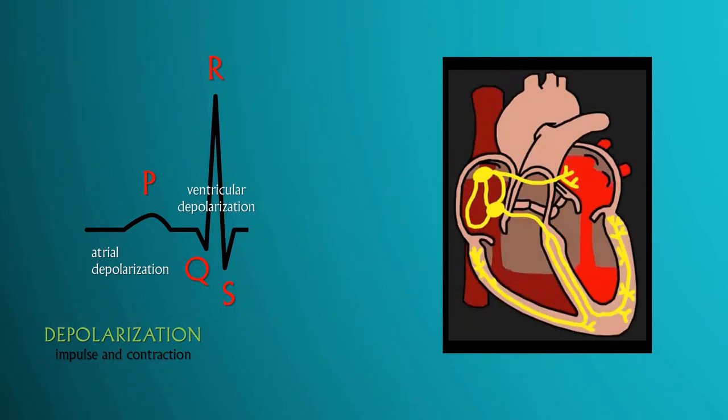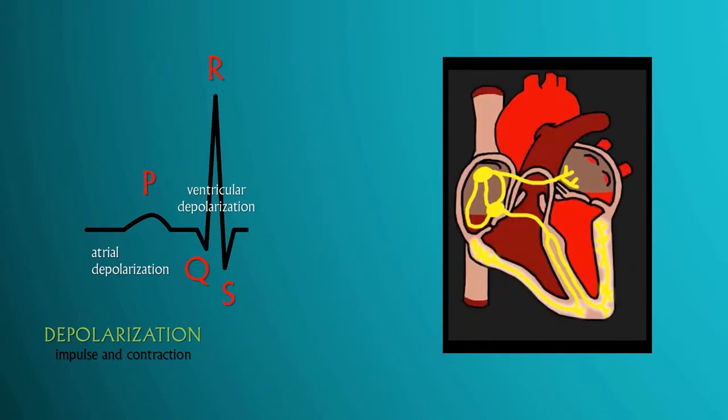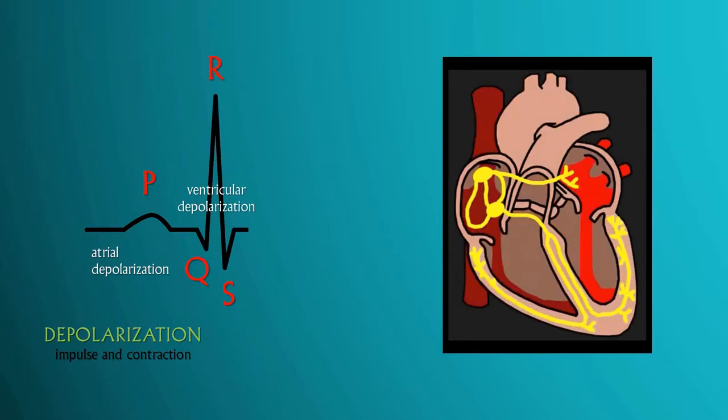As the impulse travels through the heart, cardiac muscles contract as cells depolarize. Depolarization is caused by a flood of sodium and potassium ions crossing the cell membrane, causing muscles to contract.